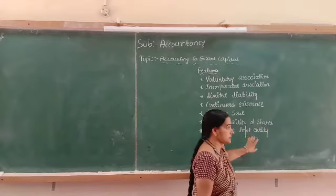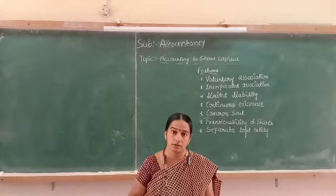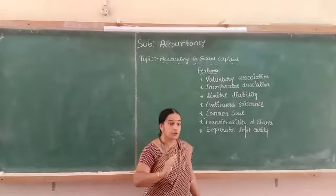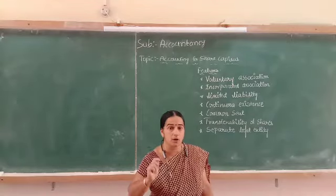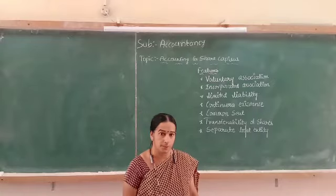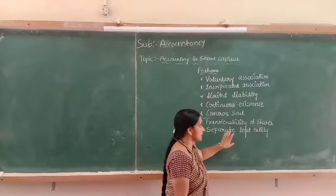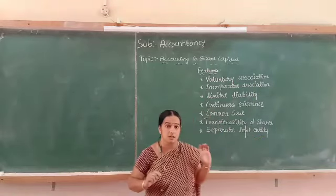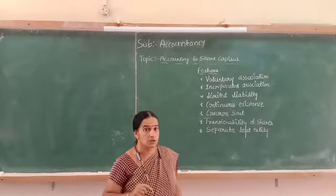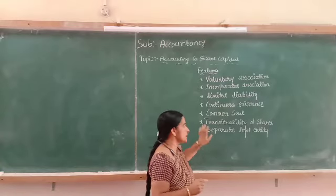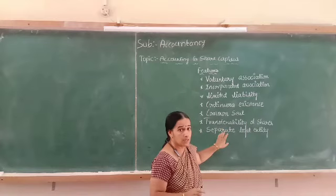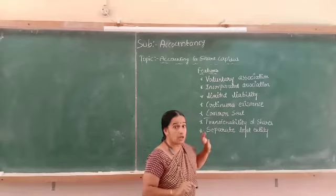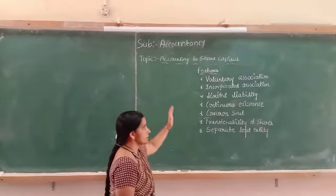Next is separate legal existence. Separate legal entity means the company is different from its owners. In the case of a partnership firm, owners and the firm are one and the same. But in the case of a joint stock company, the members are entirely different from the company's transactions. If the company wants to purchase or sell any asset, it will be done in the name of the company — the company stands like an artificial person. All transactions and documents will be in the name of the company, not in the name of the shareholders.